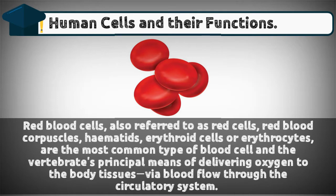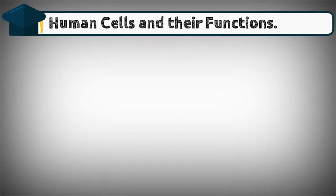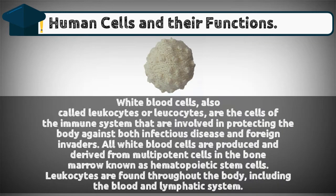Red blood cells — also referred to as red cells, red blood corpuscles, hematids, erythroid cells, or erythrocytes — are the most common type of blood cell and the vertebrate's principal means of delivering oxygen to the body tissues via blood flow through the circulatory system.